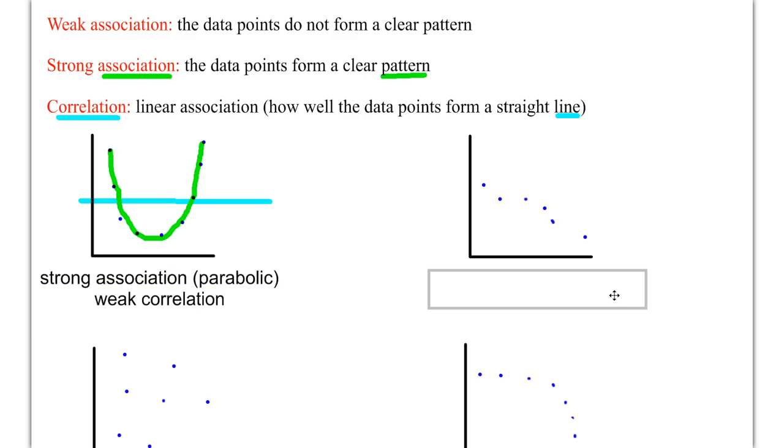The second example is an example where there is a little bit of both. You have a strong association because these points do form a clear pattern, and that clear pattern happens to be linear. Now, when you have a very strong linear pattern, that means you're also going to have strong correlation, because all that correlation is is how much of a linear pattern you form.